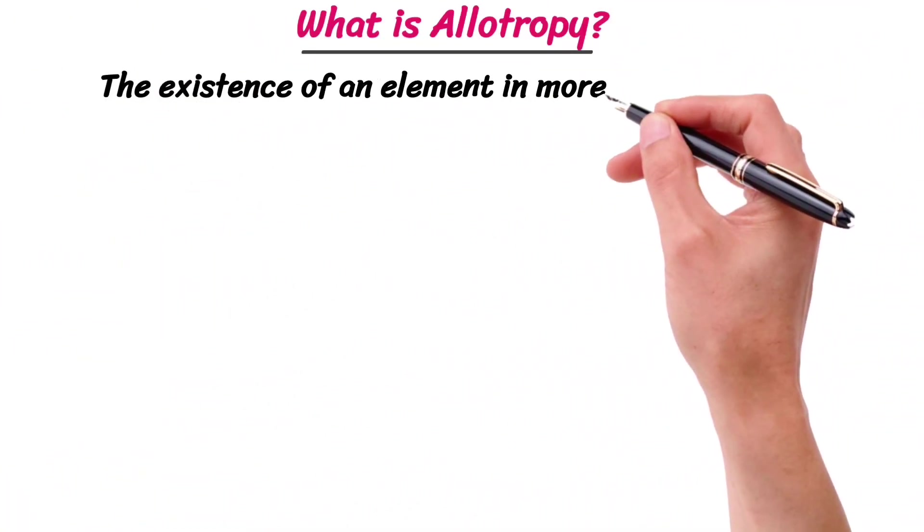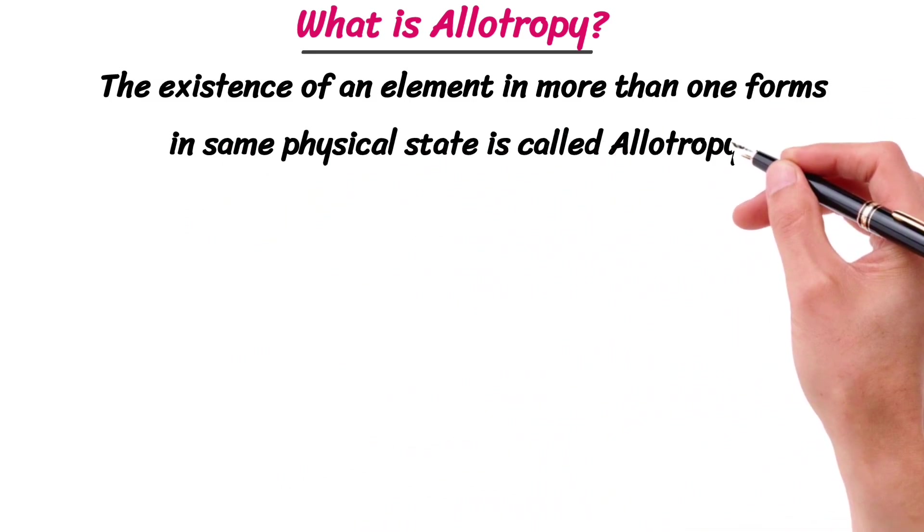The existence of an element in more than one forms in same physical state is called allotropy.